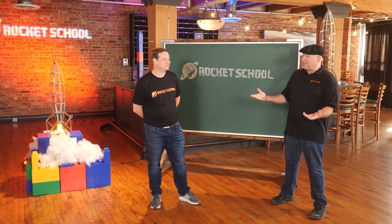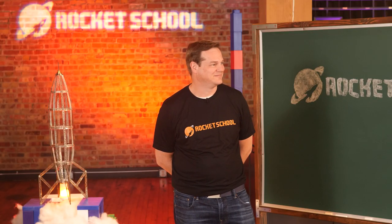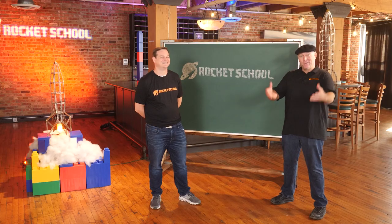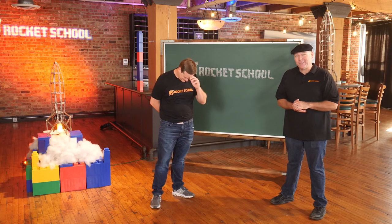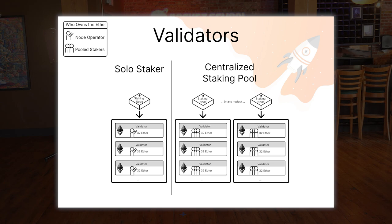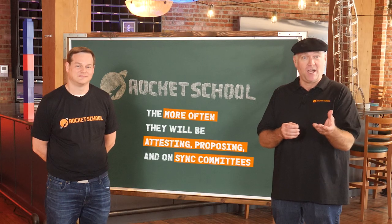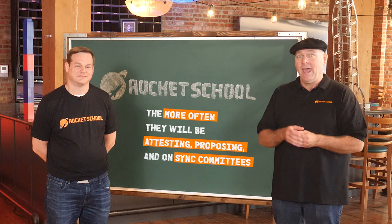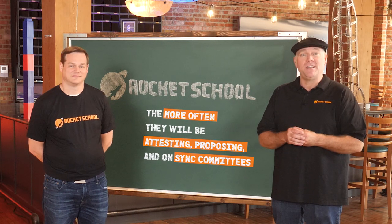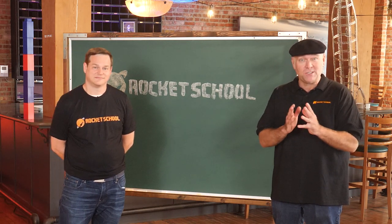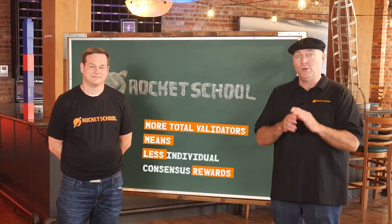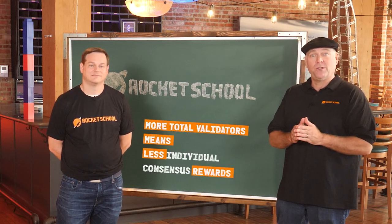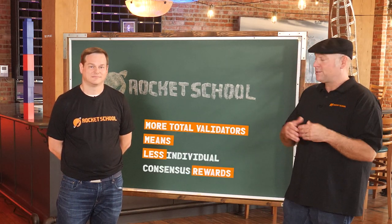Ether is currently being staked on the beacon chain in bundles of 32, and each staked bundle is called a validator. The more Ether someone stakes as validators, the more often they are assigned the above duties and the more consensus rewards they stand to earn by performing those duties successfully. The more total validators on the network, the lower the consensus rewards for everyone.